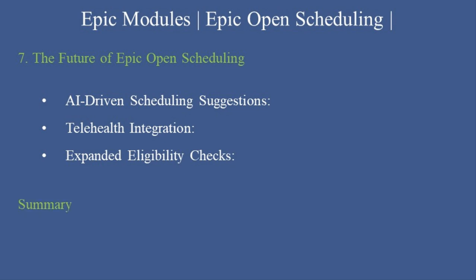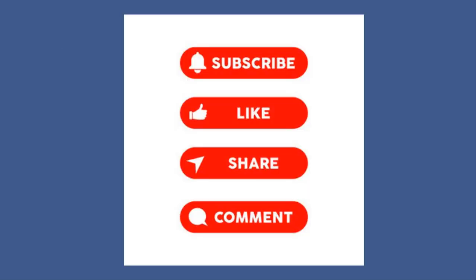Summary: Epic Open Scheduling is a powerful tool that transforms the patient experience by making appointment scheduling easier, faster, and more convenient. By implementing and mastering this feature, healthcare organizations can enhance efficiency, improve satisfaction, and reduce administrative burdens.